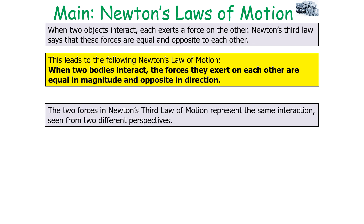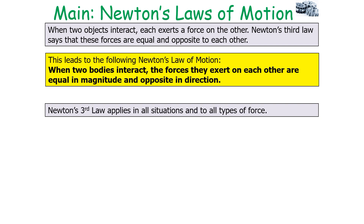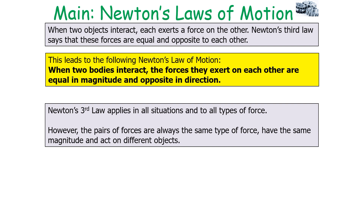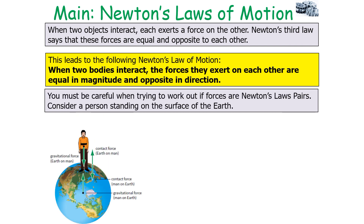The two forces in Newton's third law represent the same interaction seen from two different perspectives. For example, if you push against a wall, the wall will push back against you just as hard; when you stop pushing, so does the wall. If you pull a cart, whatever force you exert on the rope, the rope exerts the opposite pull on you. When you go swimming, you push back against the water with your arms and legs, and the water pushes you forward with an equal sized force. Newton's third law applies in all situations and to all types of forces. Remember: the forces are always the same type, have the same magnitude, and act on different objects.